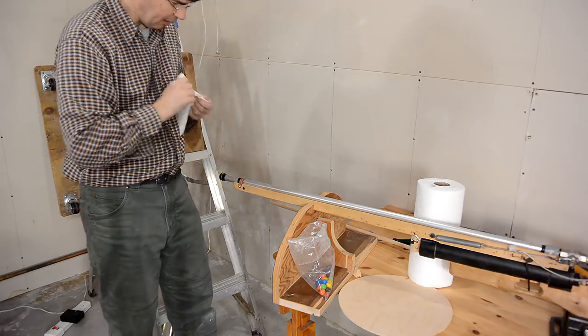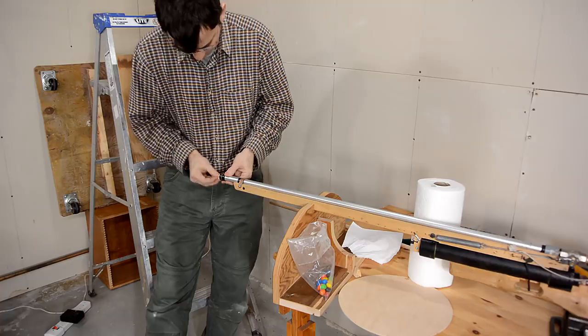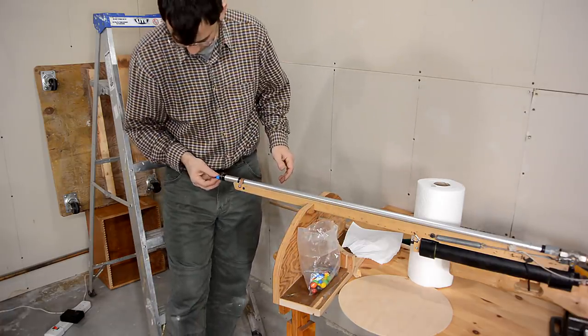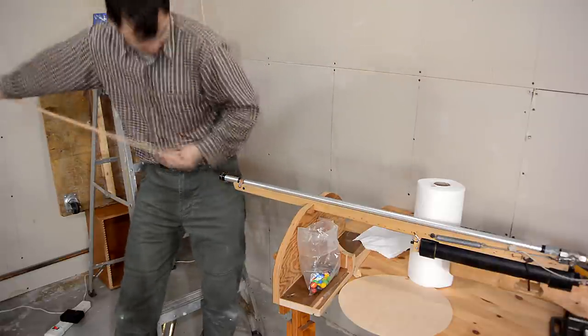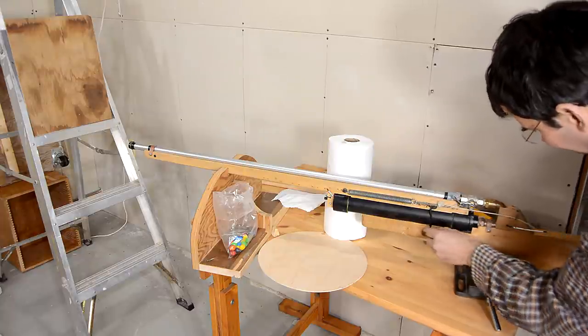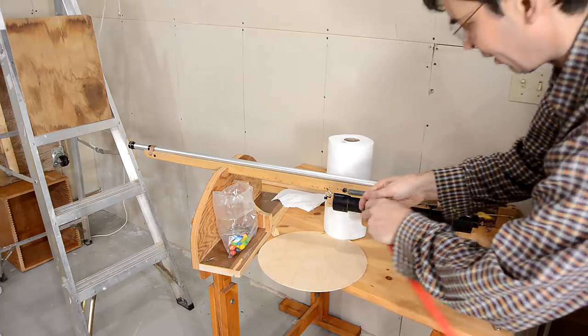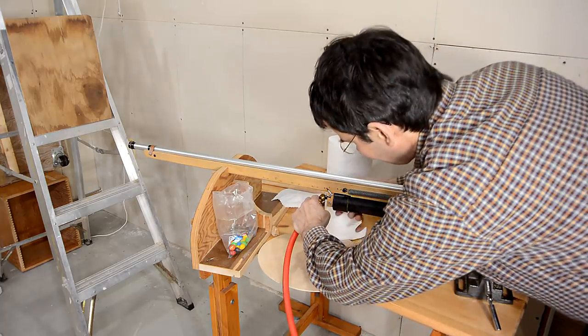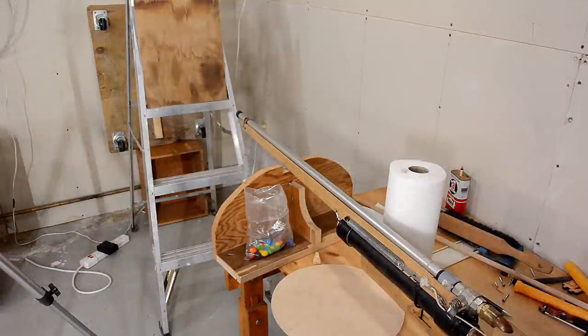Alright, now to load this gun, I need some wadding. I'm just gonna use a piece of paper towel and some edible ammo. I'll pick a blue one. I'm gonna close that valve, but first I have to cock the trigger mechanism. 100 PSI. Alright. And, here we go.